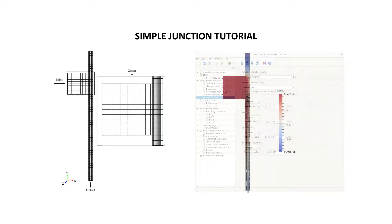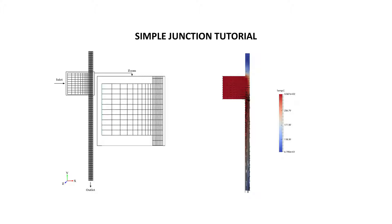The case we use in this video consists of a simple two-dimensional junction. The flow enters through a hot inlet into a cold environment and then exits. This tutorial focuses on the preparation of the CodeSaturn computations. If you want more information about the different variables, please refer to the user manual available on the CodeSaturn website.